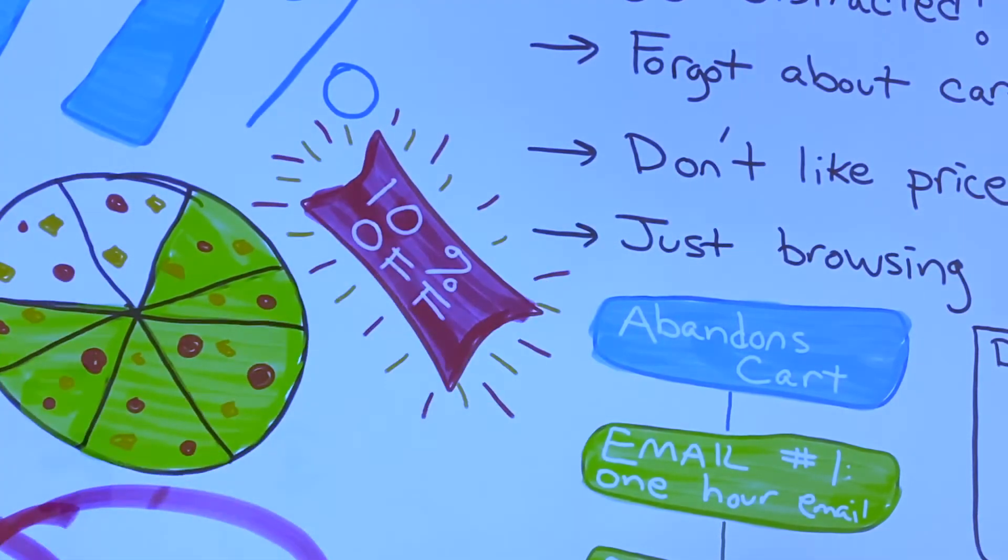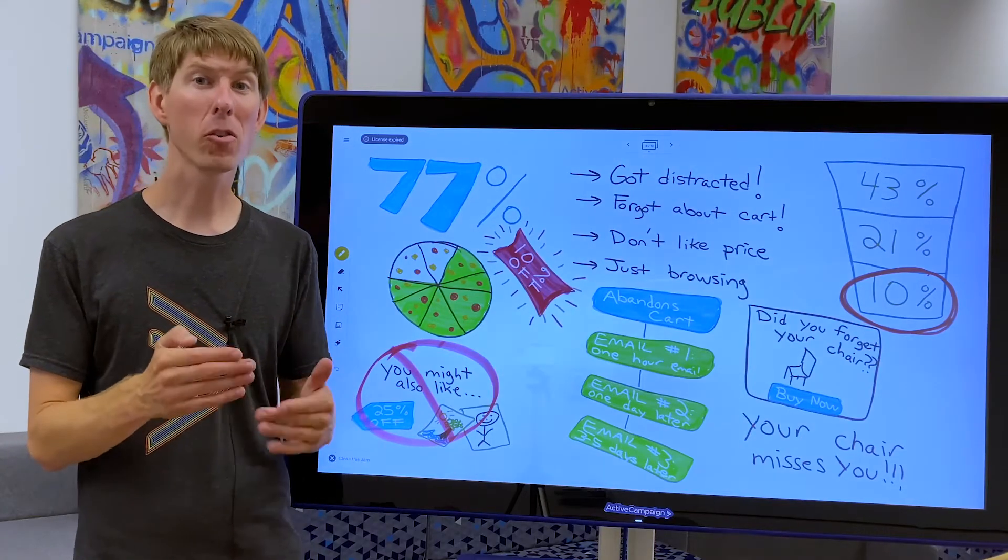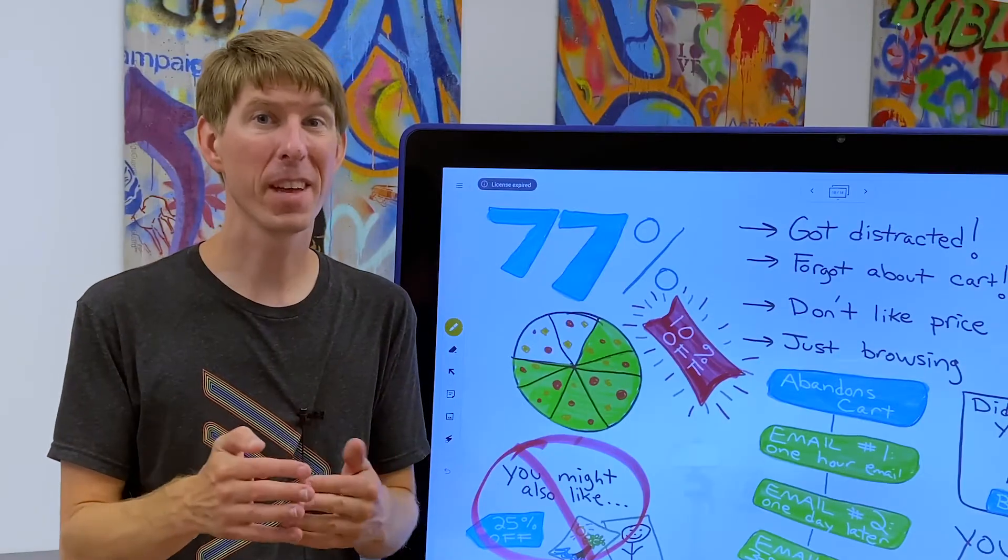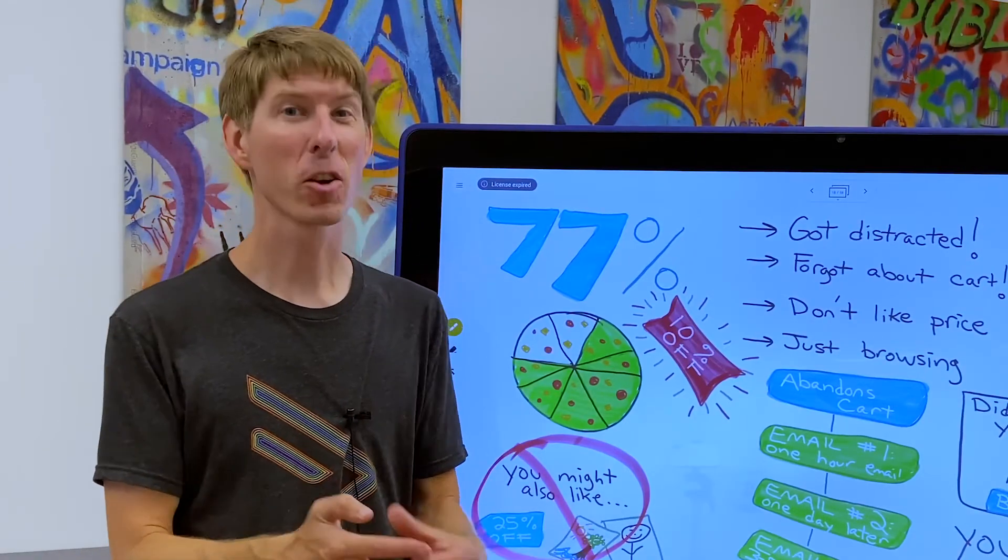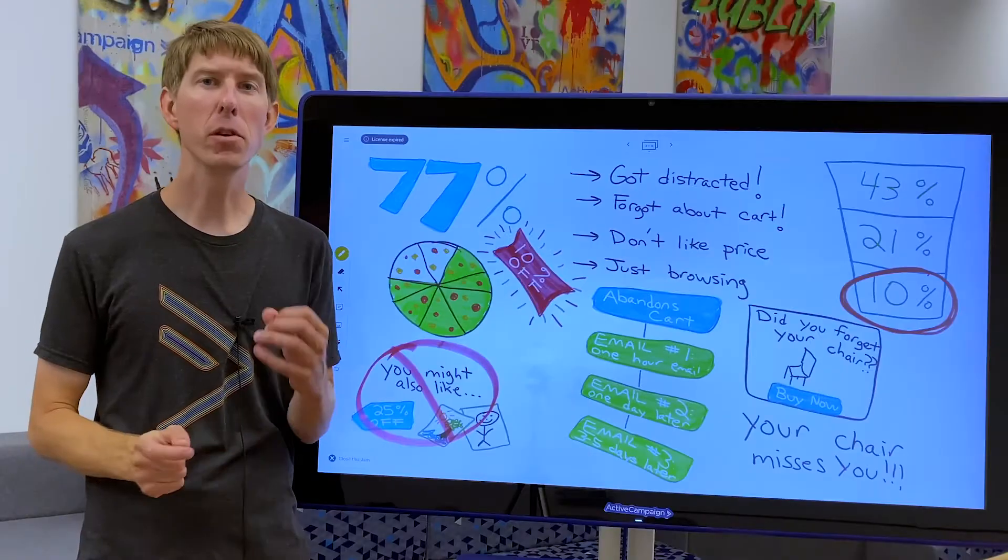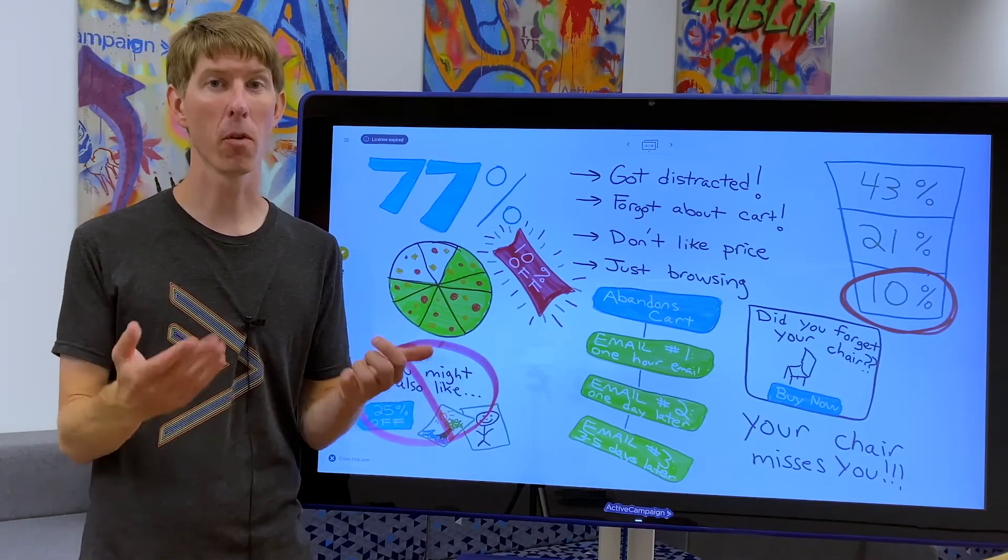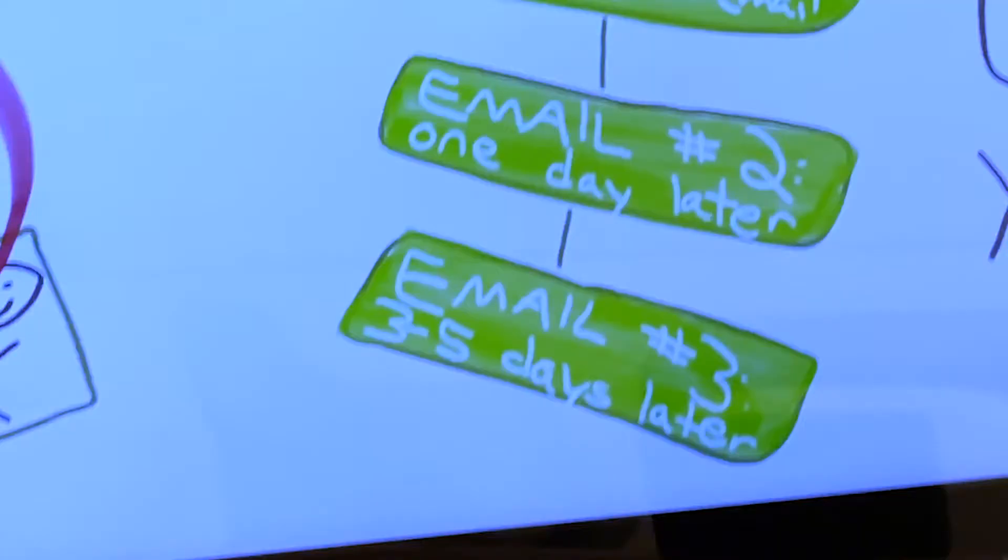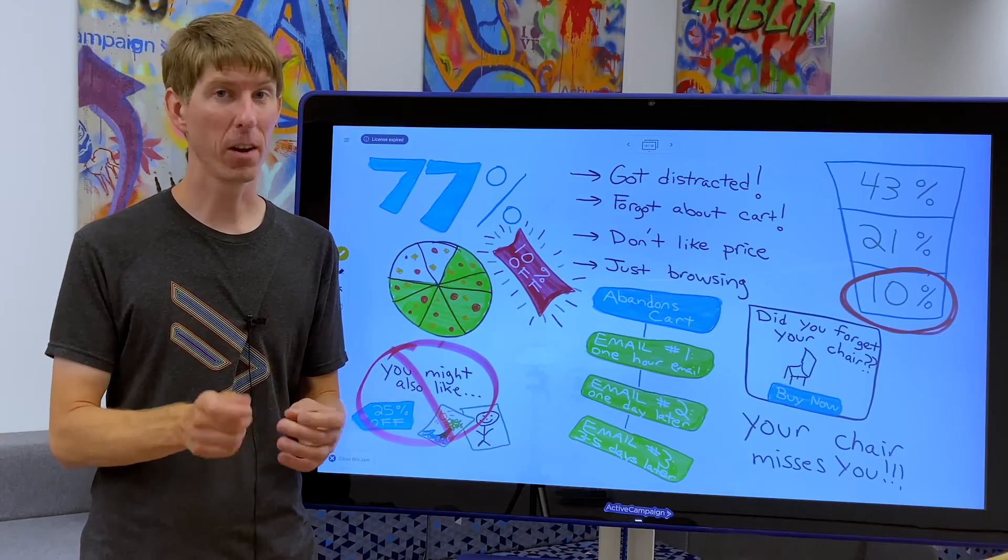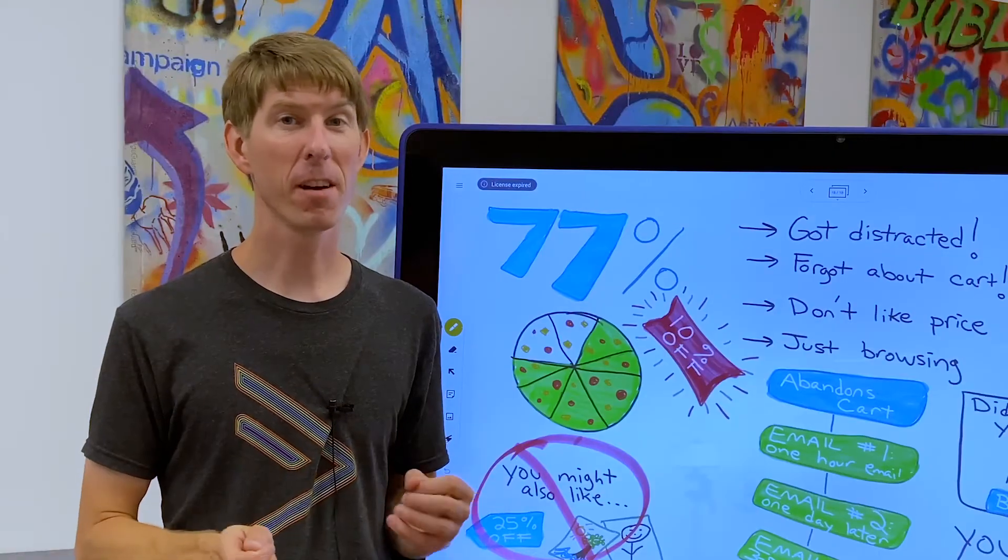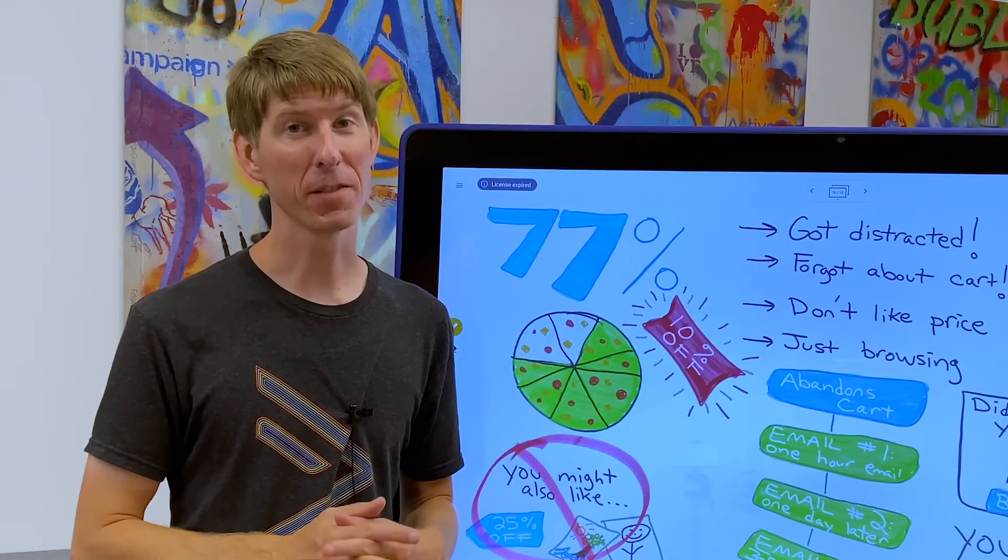Coupons can be tricky. You don't want to put a coupon too early in your abandoned cart series because people will learn that abandoning their cart is a quick way to get a discount. If you use coupons too often, you train people to wait for discounts before buying. But after three to five days, you've probably converted all the people who are already interested in your products. A 10% off coupon might just be enough to convince the others.